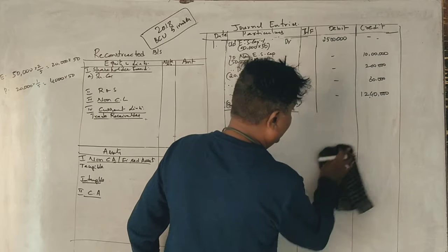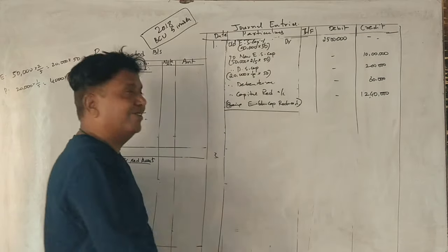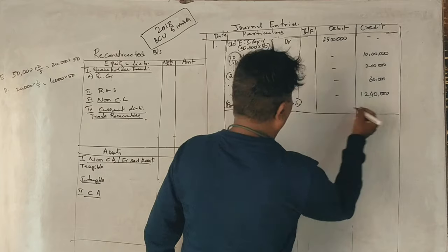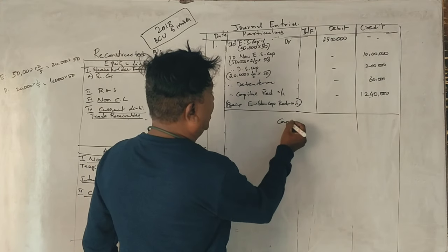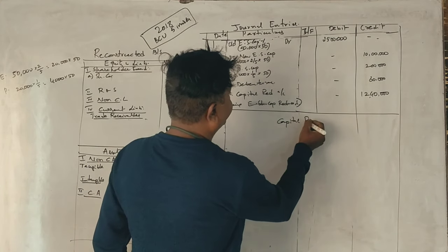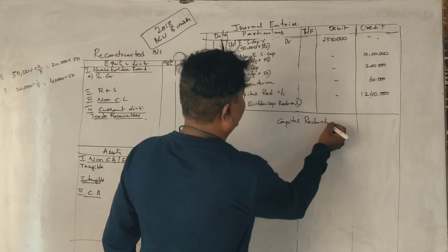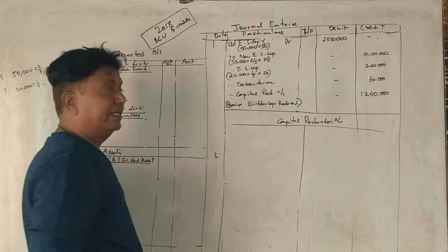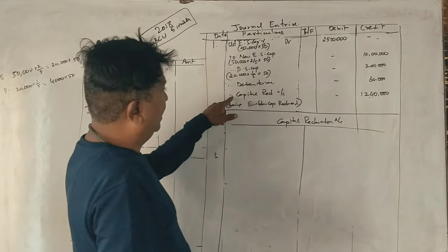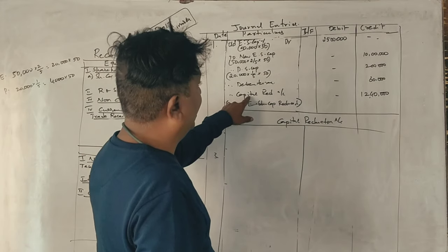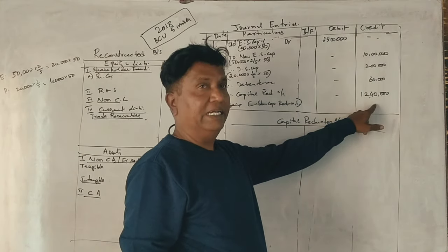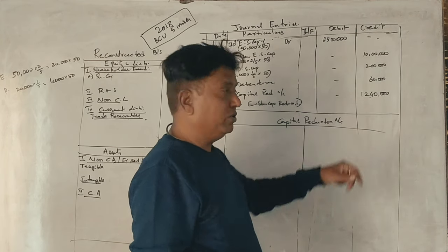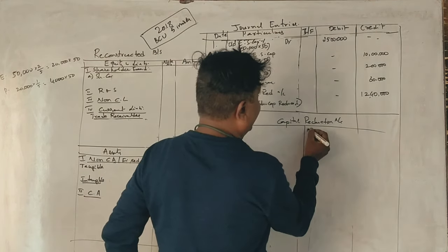Correct? If we call this account, we call it a deal. Capital reduction account. Is it correct? Capital reduction account. What is it? Credit. What is it? 1,40,000. Credit side only.